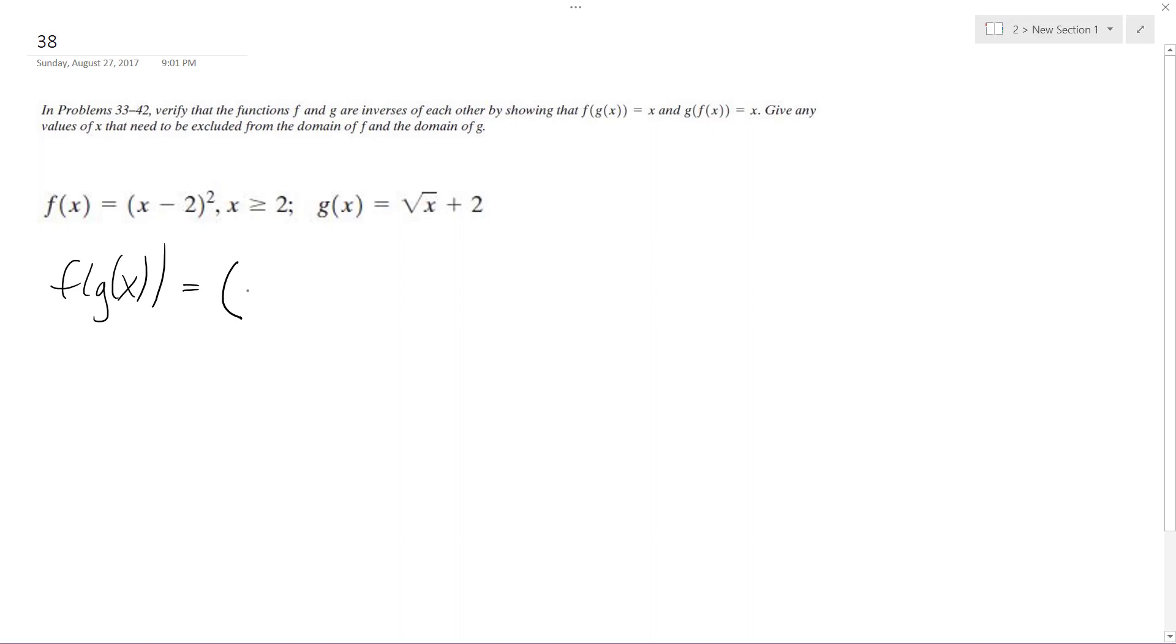So here, square root of x minus 2, plus 2, minus 2 - right here I'm plugging in g of x - then squared. So what happens is the twos cancel out, and I'm left with the square root of x squared, and I get x out. So that works.